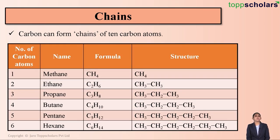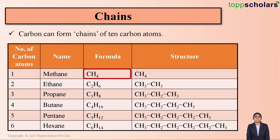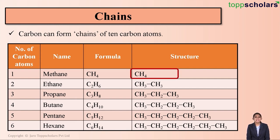You can see we have different carbon chains here. The first one is methane, which consists of one carbon atom. The formula of methane is CH4 — it contains one carbon atom and four atoms of hydrogen.